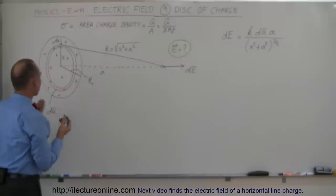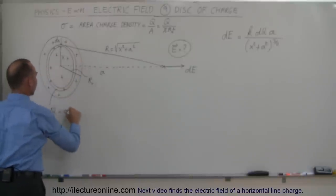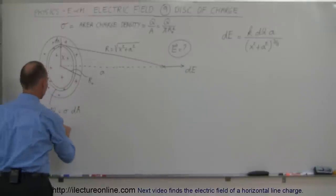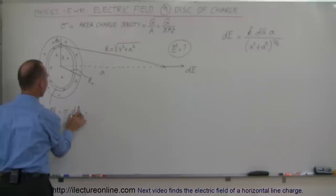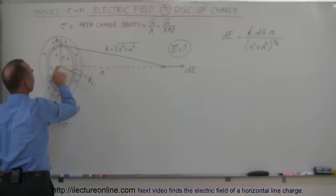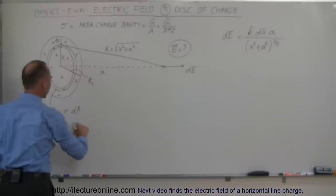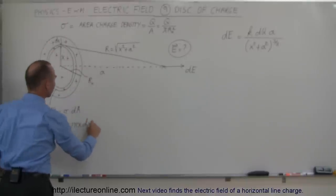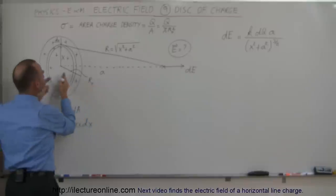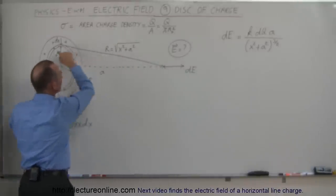Now for dQ — how do we find that? The dQ is equal to the area charge density times the area of the little ringlet, dA. This is therefore equal to sigma times the area of the little ringlet, which is the circumference 2πx — where x is the distance from the center of the disk to the ringlet — times the thickness dx. Note that I used the variable x for the radius position so as not to be confused with the full radius of the disk or the distance A.